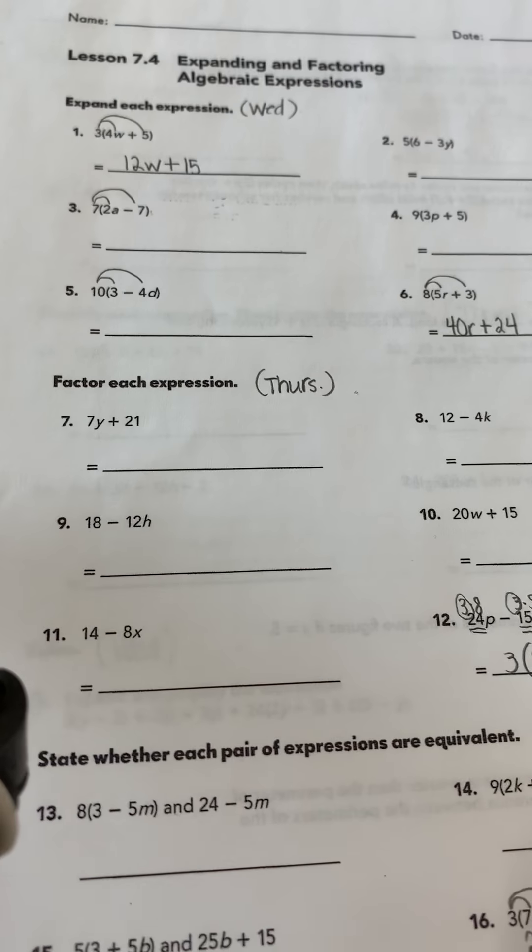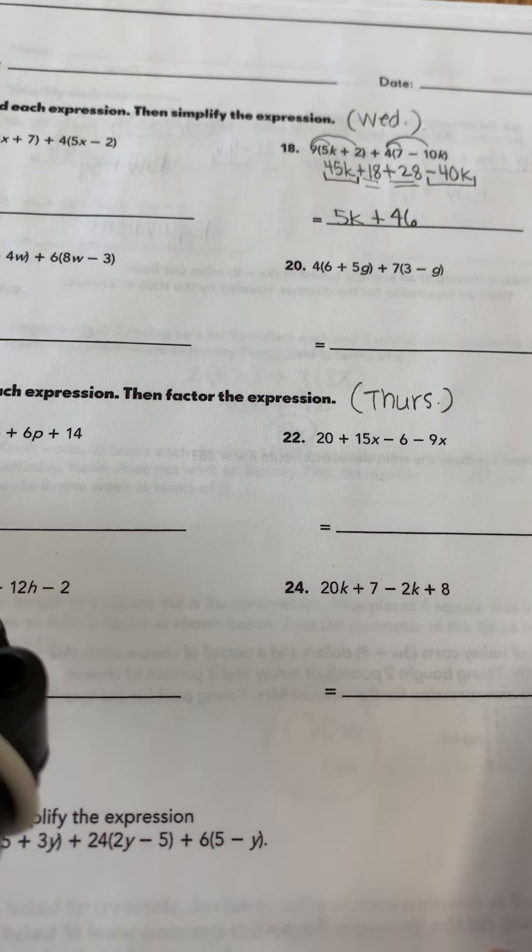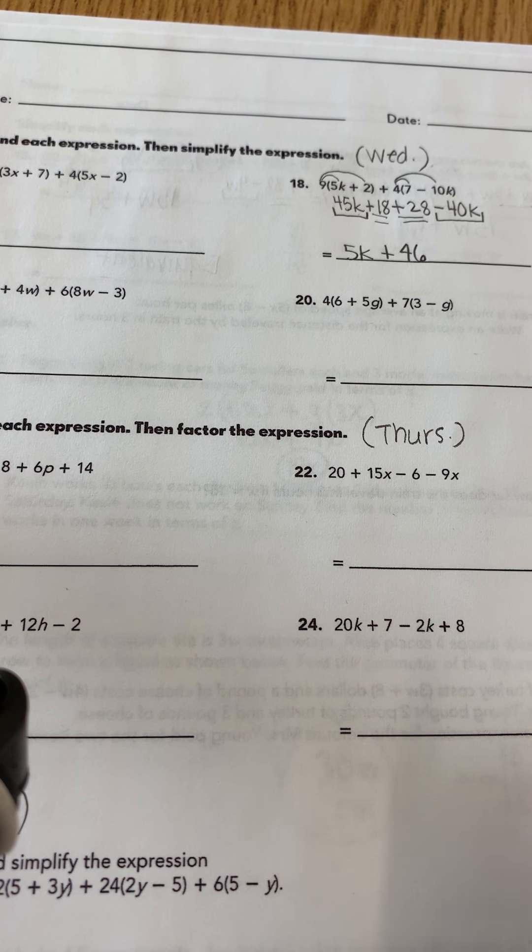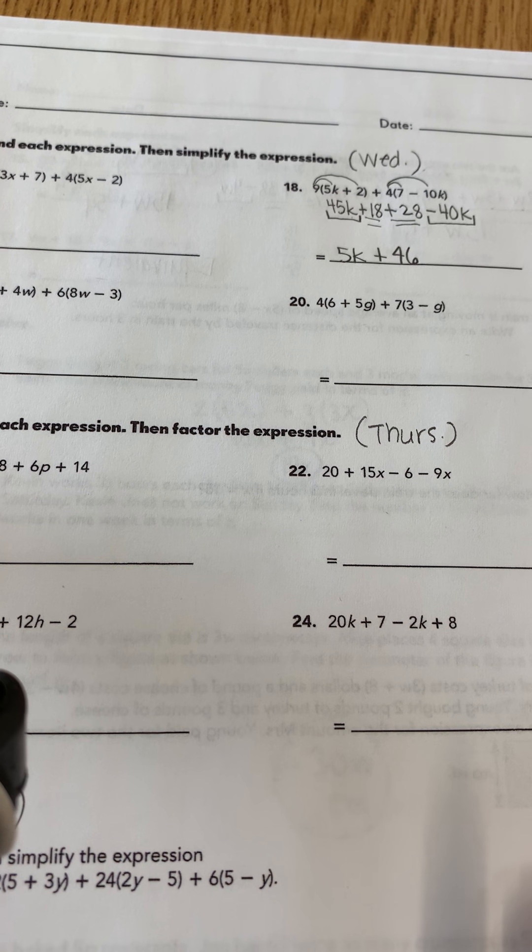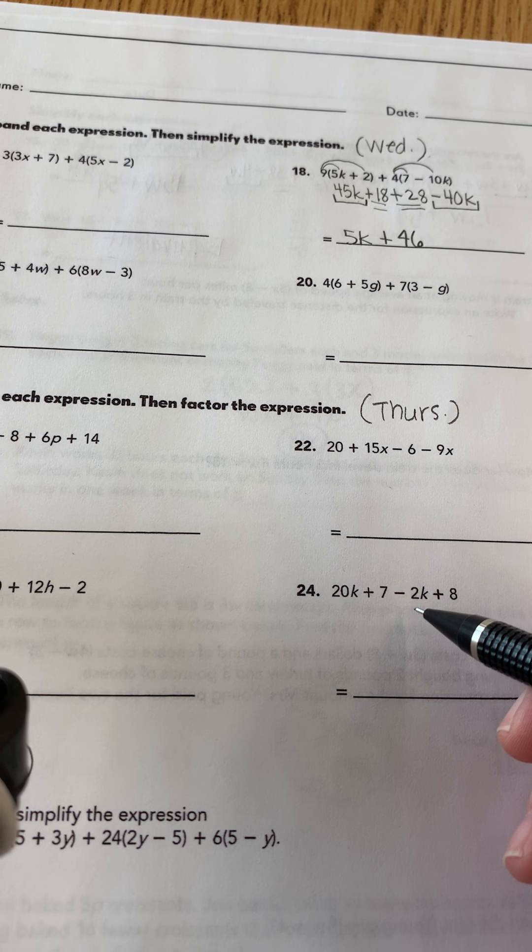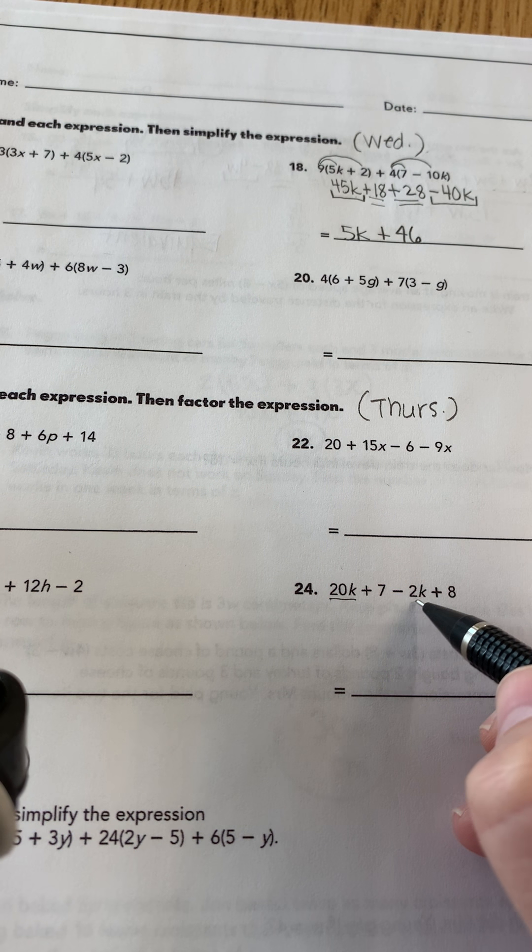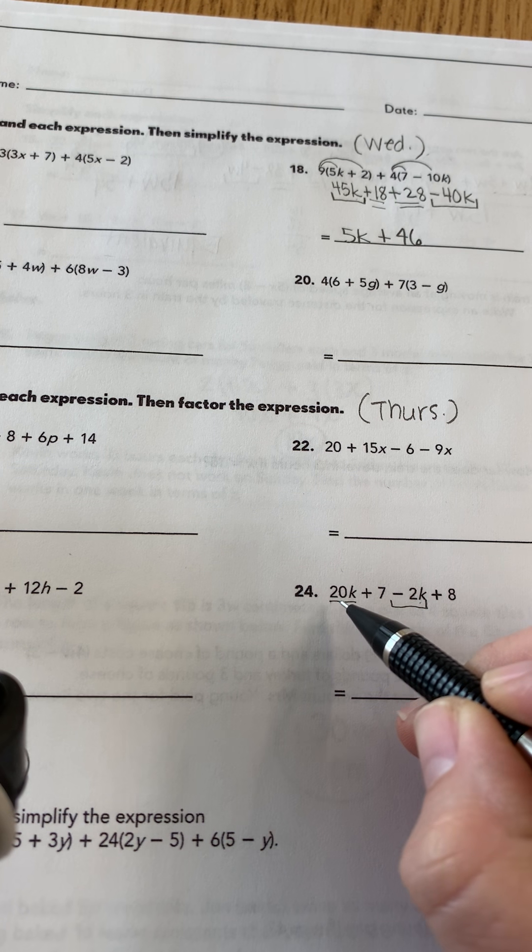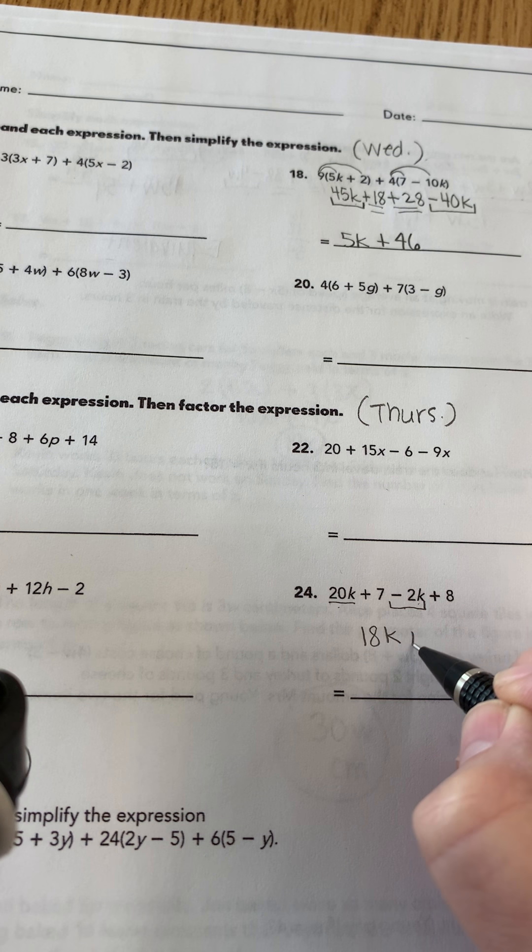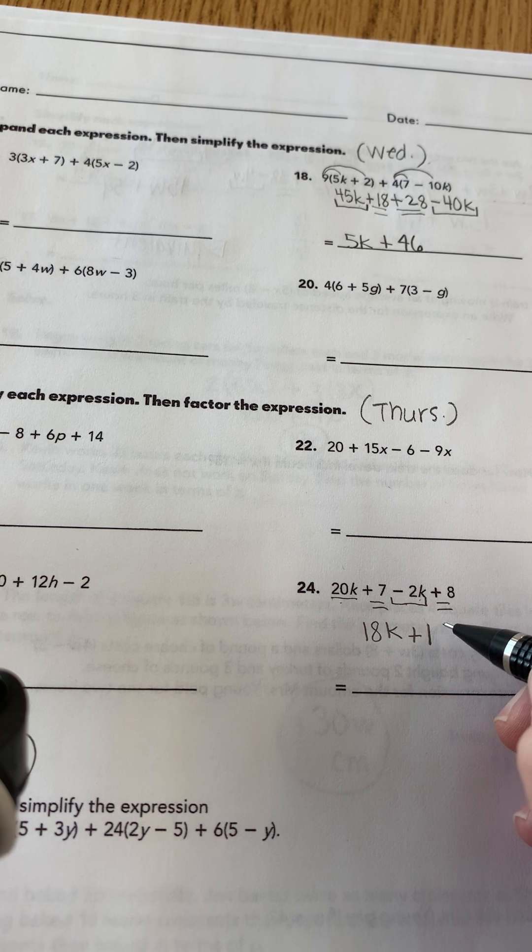So I want you to try that with this one. There's another section. 21 through 24. It says to simplify and then factor. So you're going to combine like terms and then you're going to factor them. So let's do 24. We've got 20k plus 7 minus 2k plus 8. I can combine the k's. 20k and then I've got 2k but the minus sign goes with it. So 20k minus 2k is 18k plus 7 plus 8. 7 plus 8 is 15. So it simplifies to 18k plus 15.